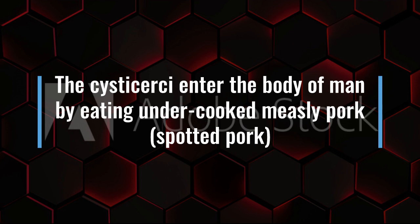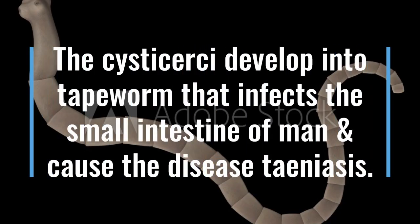So we see how everything is easy to understand — some keywords are enough to understand the whole story. When people eat measly pork meat, the cystic body enters their body. After some time, it changes into a tapeworm, which infects their small intestine. We call this disease taeniasis.